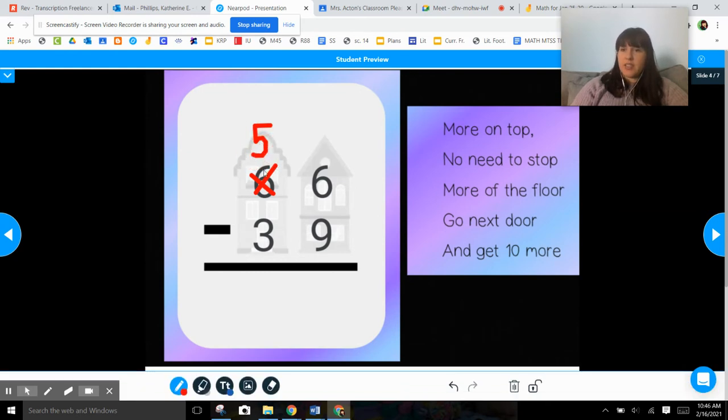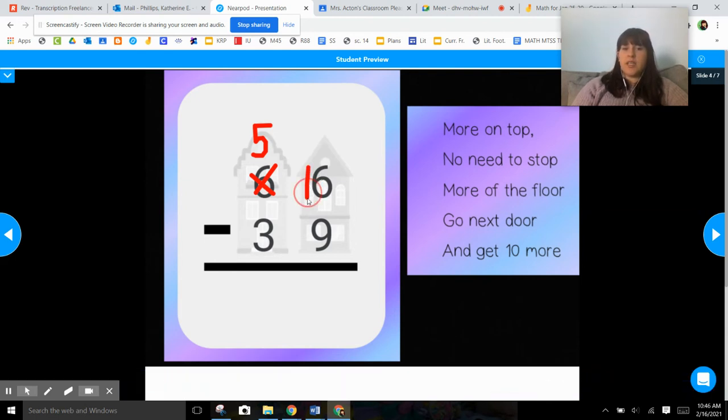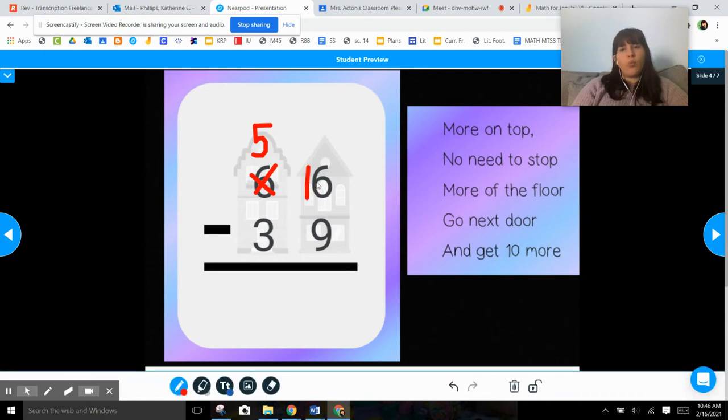So now there's 5 ten sticks instead of 6. And instead of the number 6, we're adding a ten stick to it which turns it into the number 16. And the easy shortcut to do that is just to add a 1 in front of whatever that number is that's on the top floor of our house.